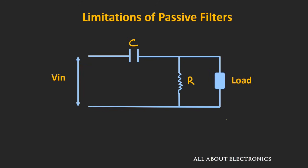Not only that, the cutoff frequency of such passive filters will also depend upon the load. So depending upon the load value, the cutoff frequency of such passive filters will get modified. Like as you can see in this high pass passive filter, depending upon the load value, the effective resistance of this filter will get modified. Hence, the cutoff frequency will also get modified.